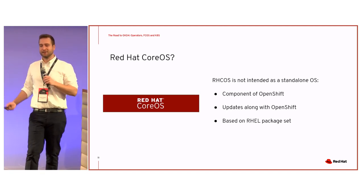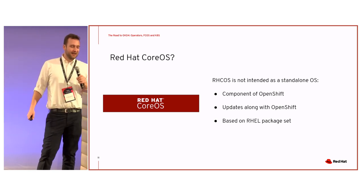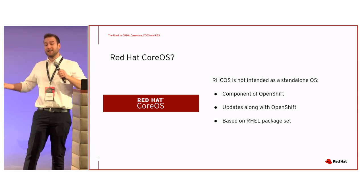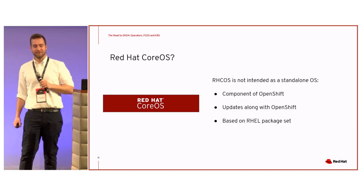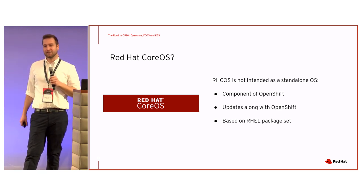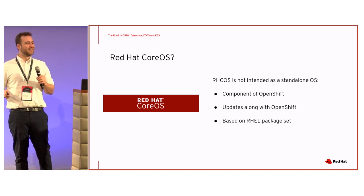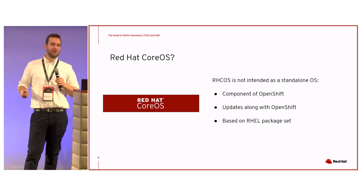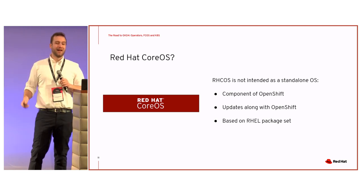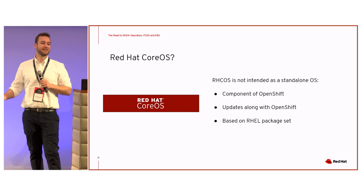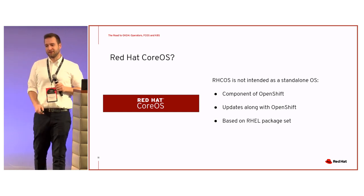What's the difference with Red Hat CoreOS? Red Hat CoreOS is a component and implementation detail of OpenShift. It updates alongside OpenShift — there's only one lifecycle. You don't really notice anything about the update happening to the operating system. And as opposed to Fedora CoreOS, Red Hat CoreOS is based on the RHEL package set.